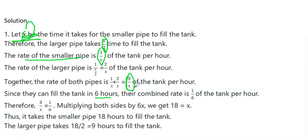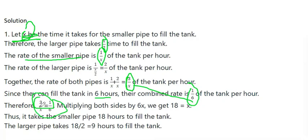Their combined rate is 1 over 6 of the tank per hour. So the equation becomes 3 over x equals 1 over 6. We need to solve this rational equation to find x.